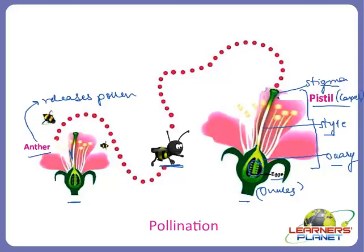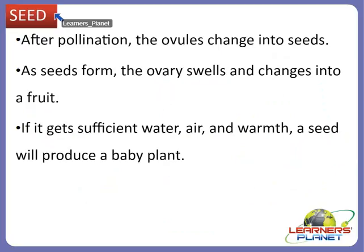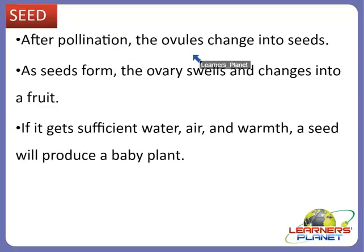Plants pollinated by animals or insects are often brightly colored and have a strong smell to attract animal pollinators. Another way plants are pollinated is by wind and water. Since wind-pollinated plants do not need to attract animal pollinators, they can be dull-colored or unscented. After pollination, the ovules change into seeds.